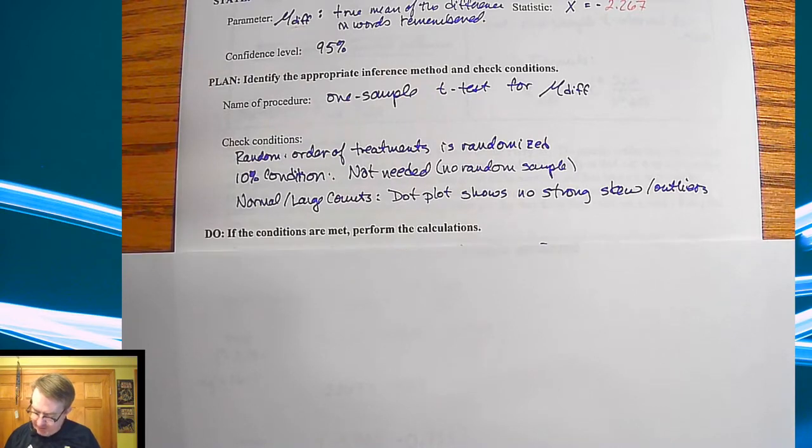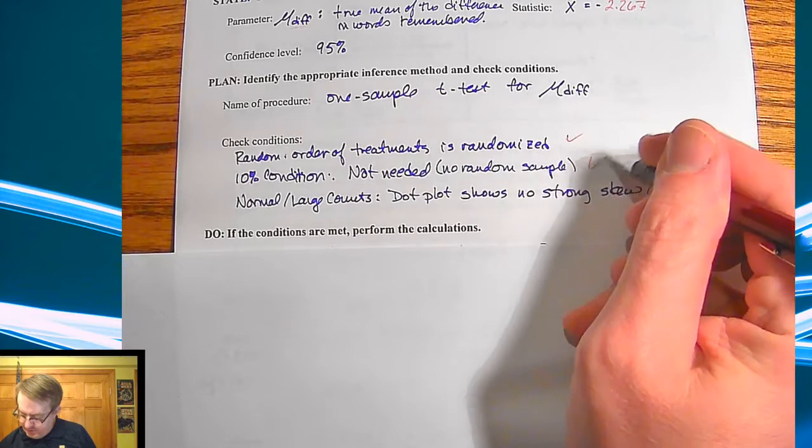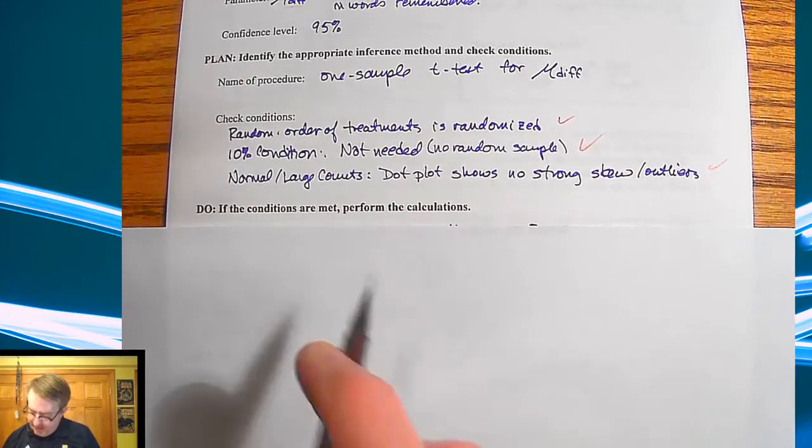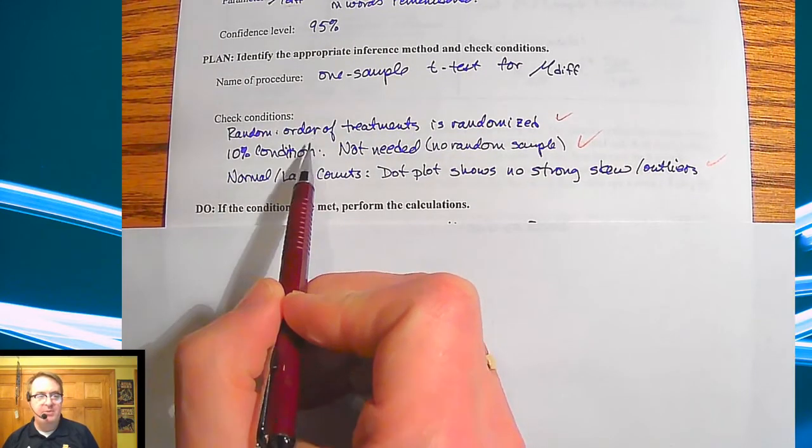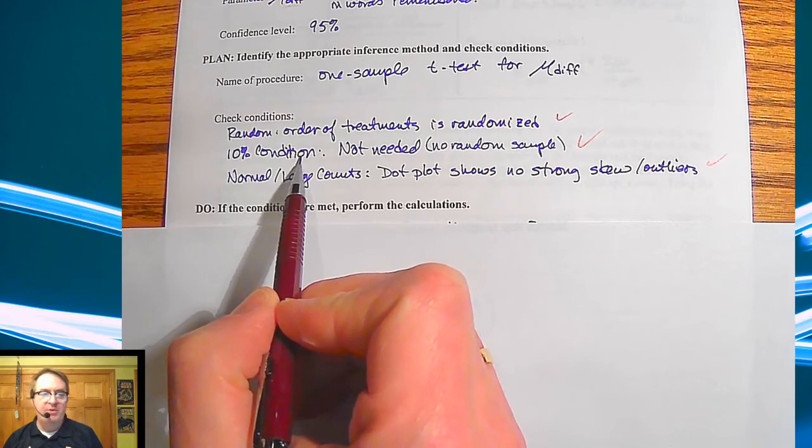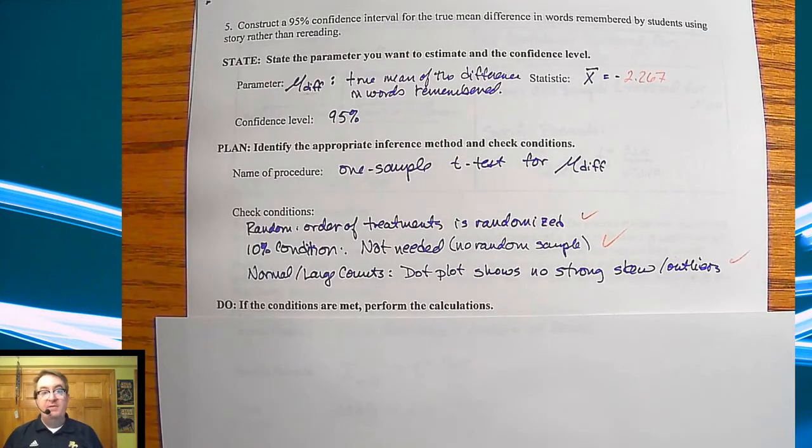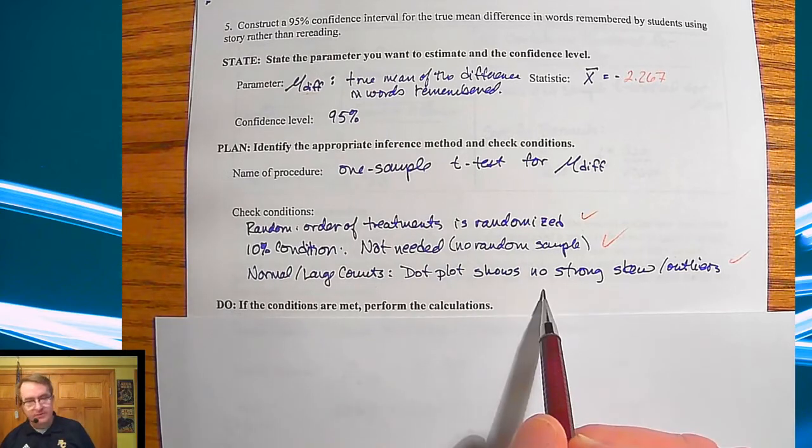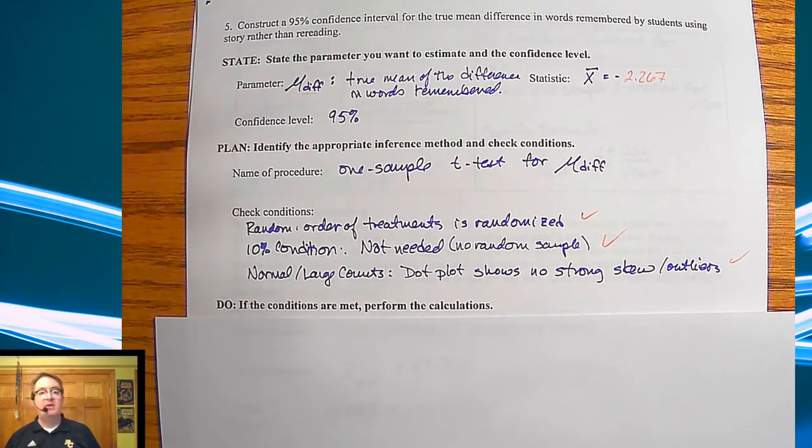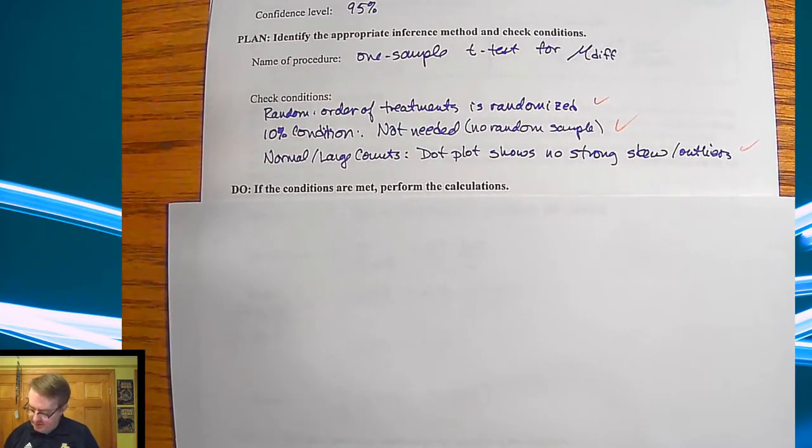Now, if the conditions are met, we're going to perform the calculations. So conditions are met. And again, remember, so we can extend it to the population. This is so we don't have to worry about replacement, not that we need it. And then for normal and large counts, allows us to say what? Allows us to say that we are using a normal distribution. Okay.